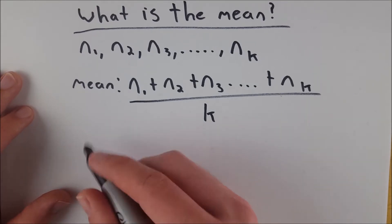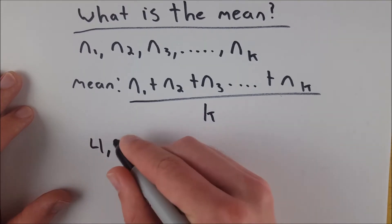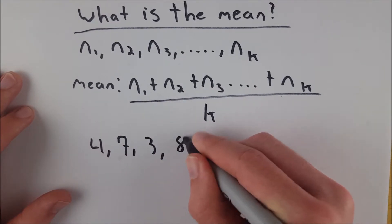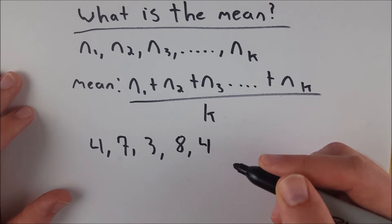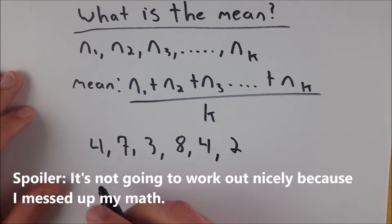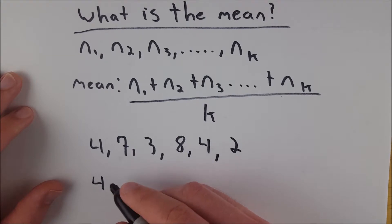let's say that we have these data points right here, we've got four, let's say seven, three, eight, and let's say we have another four, and a two, we'll put in a two there as well. So now, all we have to do is add up all of our data points, and they don't have to be in order, of course, because addition is commutative.